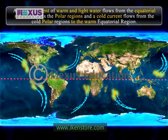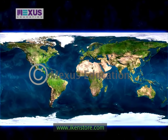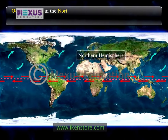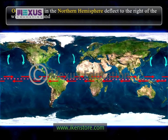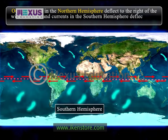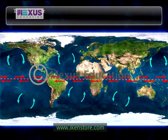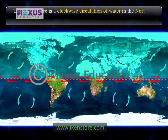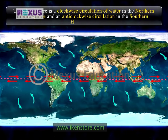The prevailing winds lend speed and direction to a mass of water. Ocean currents in the northern hemisphere deflect to the right of the wind direction, and currents in the southern hemisphere deflect to the left. Therefore, there is a clockwise circulation of water in the northern hemisphere and an anti-clockwise circulation in the southern hemisphere.